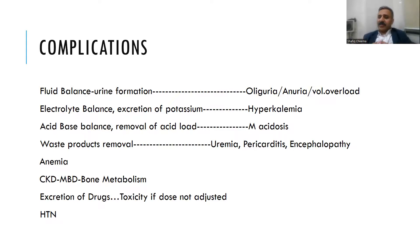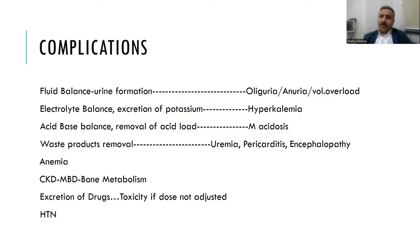Some toxins and drugs are not excreted, leading to drug toxicity. For example, giving a regular dose of meropenem in AKI could cause seizures due to meropenem toxicity. You could also develop hypertension if the AKI is due to glomerulonephritis.